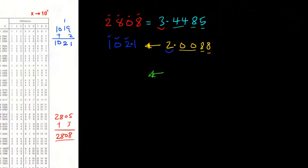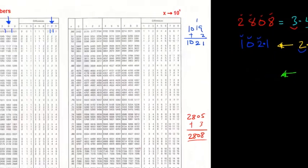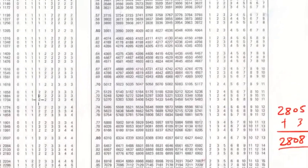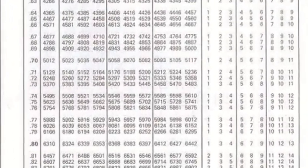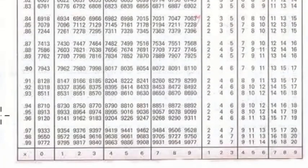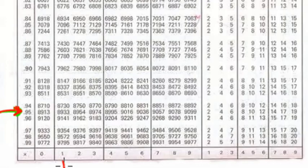Now let's try another one. We have 10 raised to the power 0.9517. The logarithm here is just the power — logarithm means power. So what we'll do is look for 95 under 1, difference of 7. Let's go — 95 under 1, difference of 7.